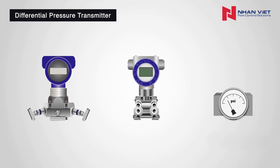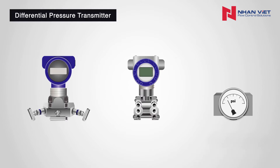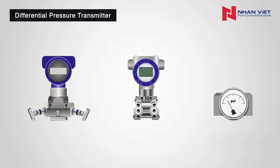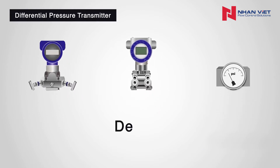Now that we know a little bit about pressure, let's discuss how a differential pressure transmitter actually measures pressure and tells us what the pressure is. From now on in this lesson, we are going to use the terminology utilized in the industry. Delta P, or DP, is the industry standard term for the measured differential pressure.